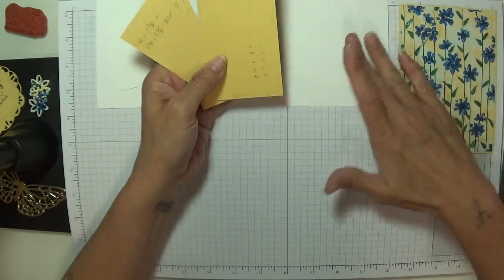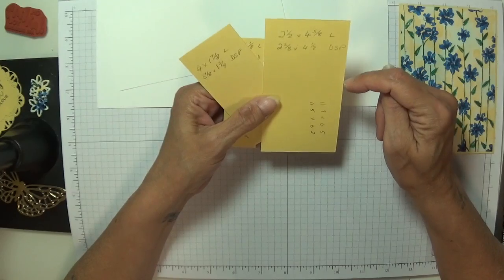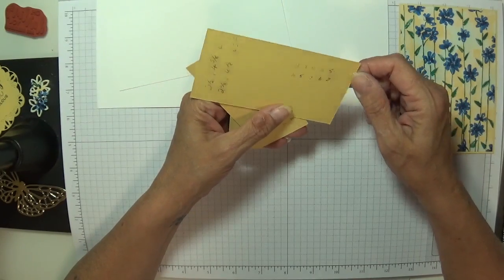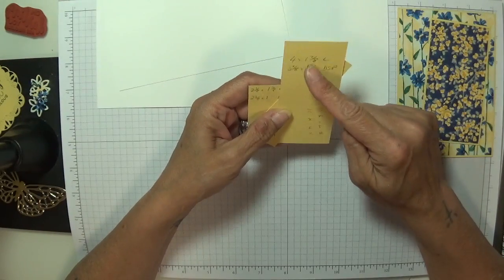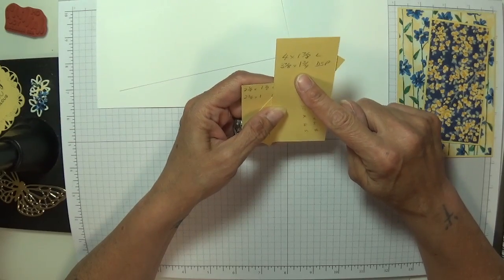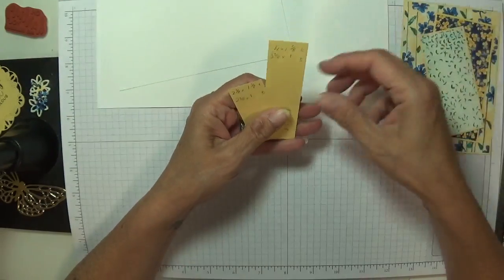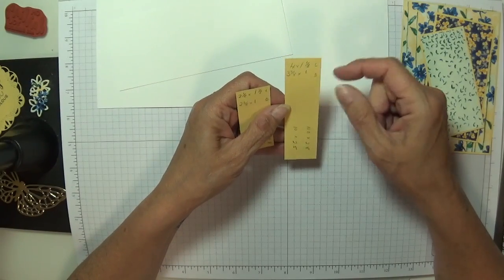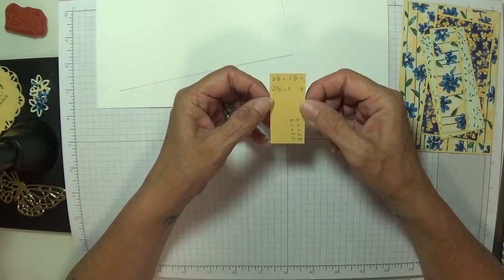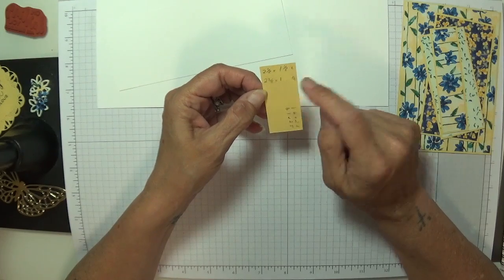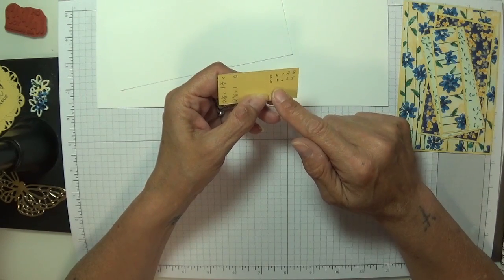With this being a directional paper, this is why you have to be careful about the way you cut your card. You're going to need another one at 2 and a half by 4 and 5 eighths for the layer. The DSP is 2 and 3 eighths by 4 and a half, which is 11.7 by 6.5. This one is 4 by 1 and 7 eighths for the layer.